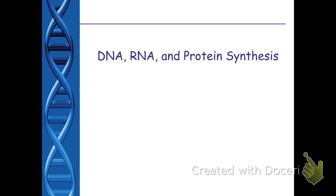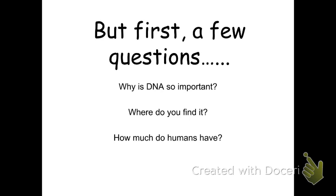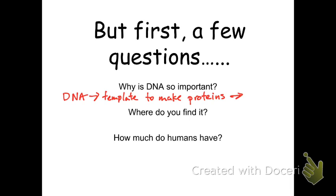Why is DNA so important? DNA is basically the template used to produce protein — it's kind of like the blueprint to make proteins. Proteins are important because they control our traits, like how much muscle you have and what color hair you have. Those are all dependent on protein.